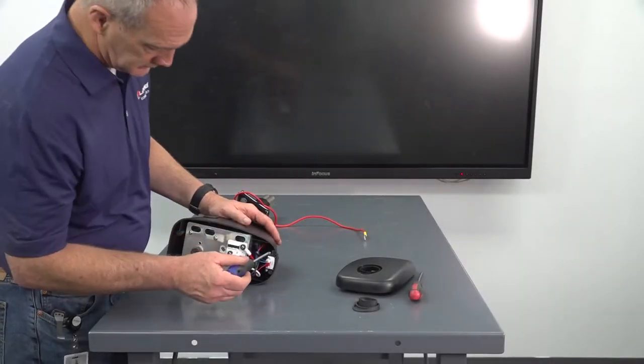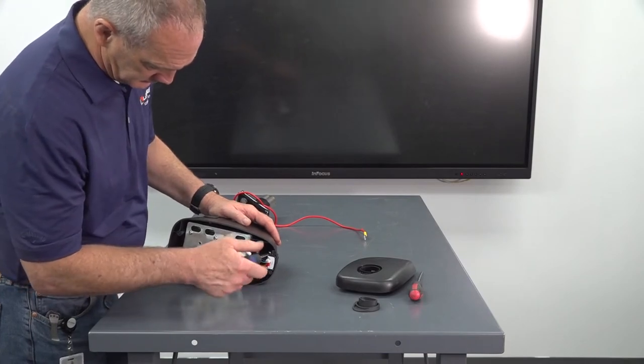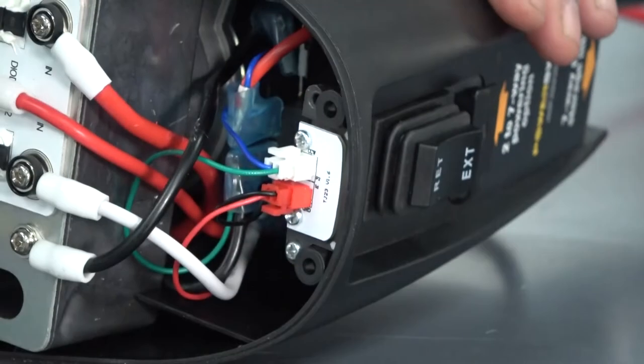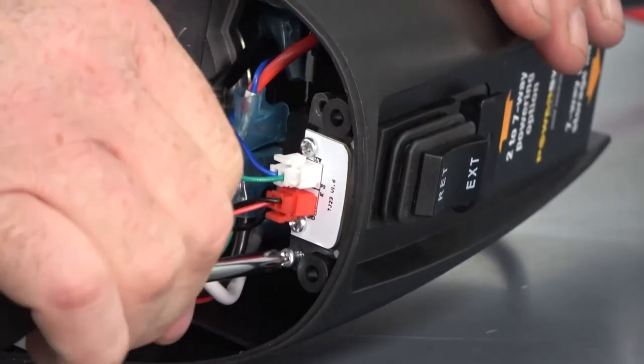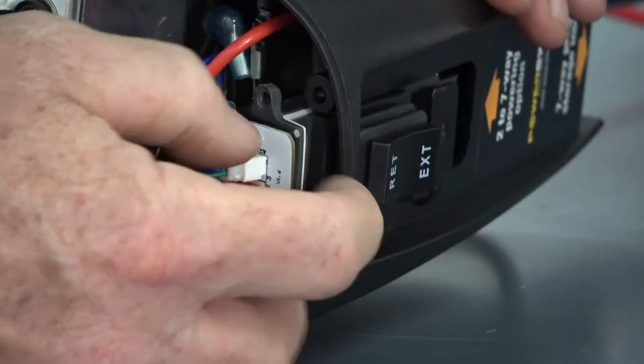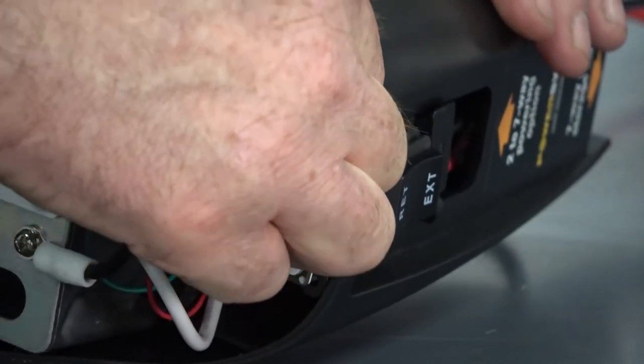With a Phillips head screwdriver, remove the two screws connecting the bezel to the interior of the head cover assembly. It will help to label the wires using electrical tape for later.